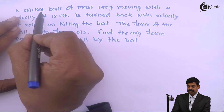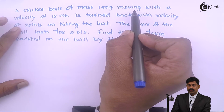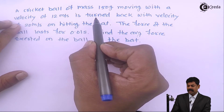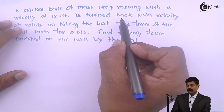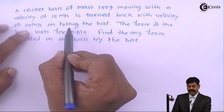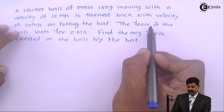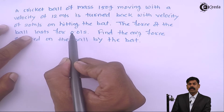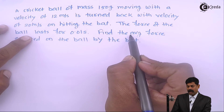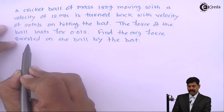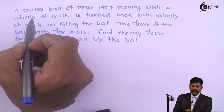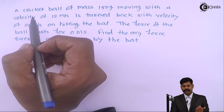A cricket ball of mass 150 gram moving with a velocity of 12 meter per second is turned back with a velocity of 20 meter per second on hitting the bat. The force of the ball lasts for 0.01 second. Find the average force exerted on the ball by the bat.